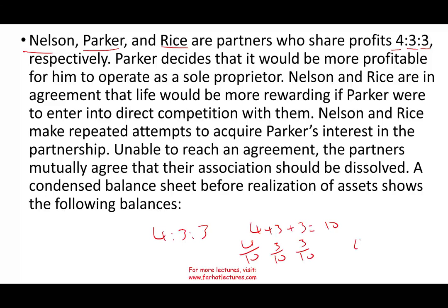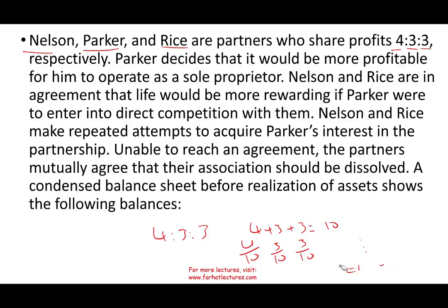Every time you are given the information this way, let's assume you are given 4 to 3 to 5. You add 4 plus 3 plus 5, and that's 12. So it's going to be 4/12, 3/12, and 5/12. This is how you determine the percentages.